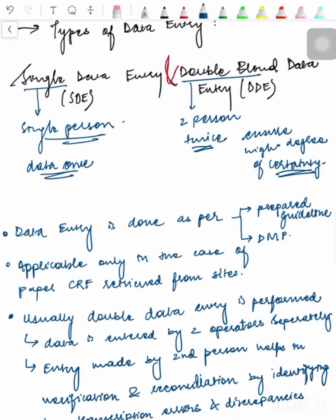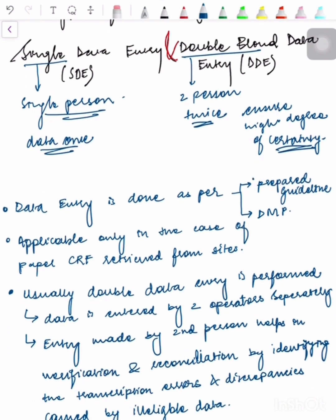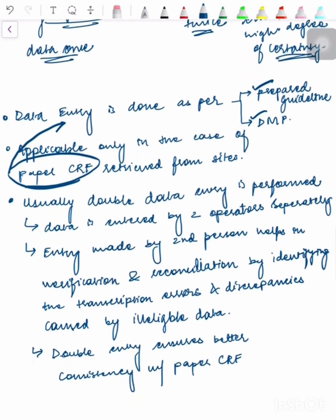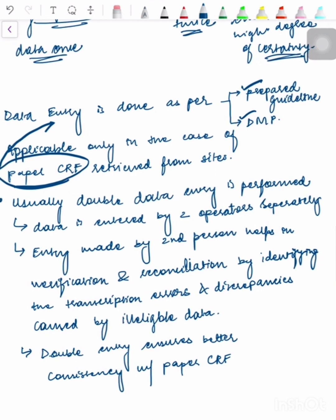Data entry is done as per prepared guidelines and as per the Data Management Plan. It is applicable only in the case of Paper CRF retrieved from sites - eCRF already has data entered directly. Usually, double data entry is preferred because data is entered by two operators separately, and entry made by the second person helps in verification and reconciliation.